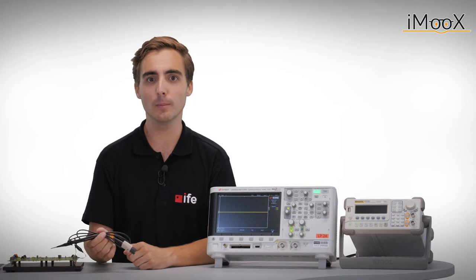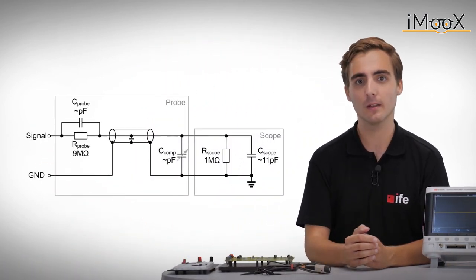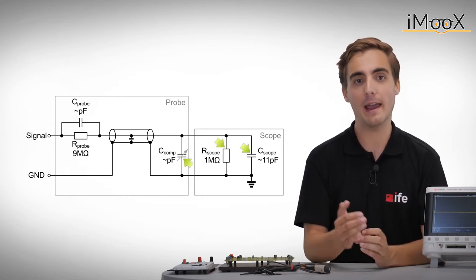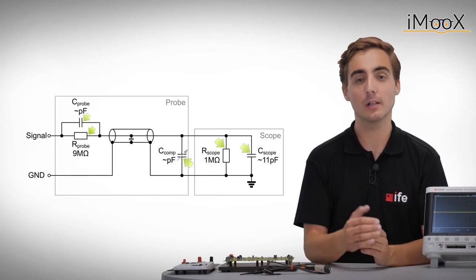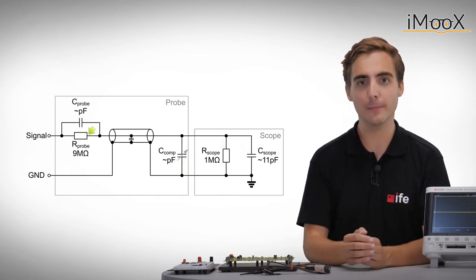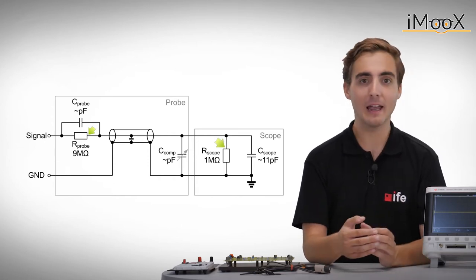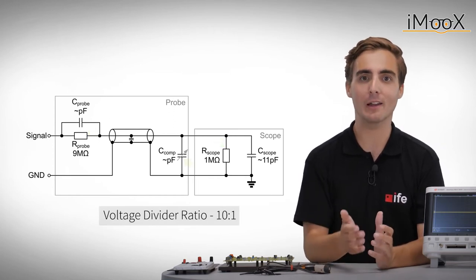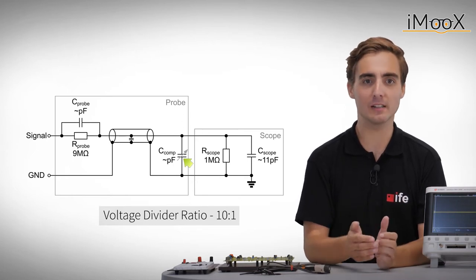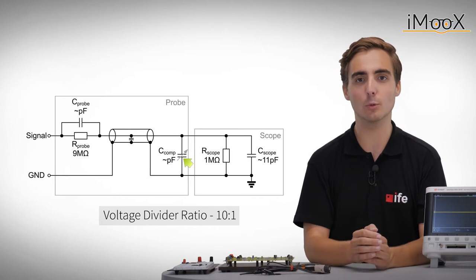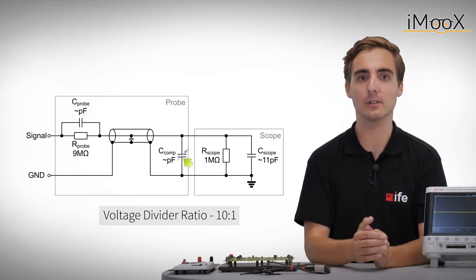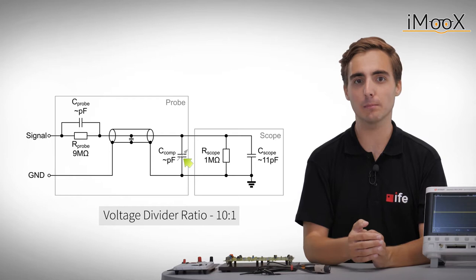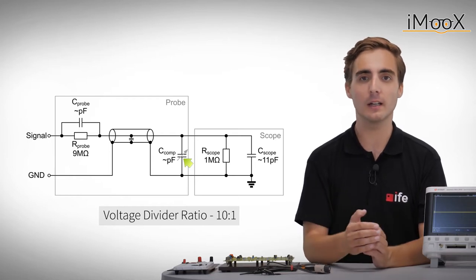A typical schematic of such a probe could look like this. We can see the scope channel input impedance, a compensation capacitance and a probe input impedance. You can see that the 9 Mega Ohm resistor of the probe and the 1 Mega Ohm resistor of the scope act as a voltage divider of 10 to 1 for DC. The voltage probe offers a compensation capacitor which needs to be adjusted accordingly, so that this ratio of 10 to 1 is maintained over a broader frequency range. Depending on the scope and the probe this ratio of 10 to 1 is either set automatically by the scope or has to be changed manually in a channel menu.